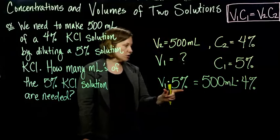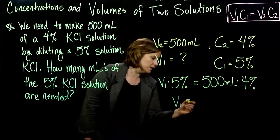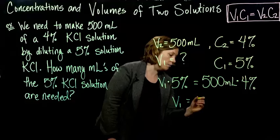And so now I'm just solving for my V1, so I just have to divide on both sides by 5%, and that gets V1 by itself.